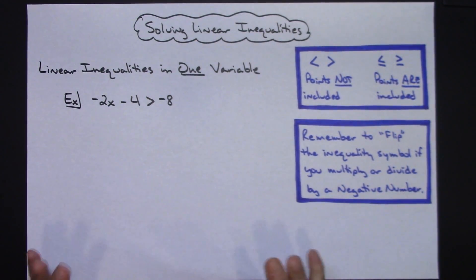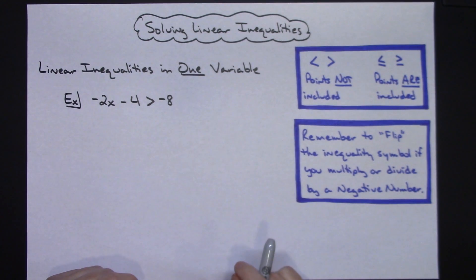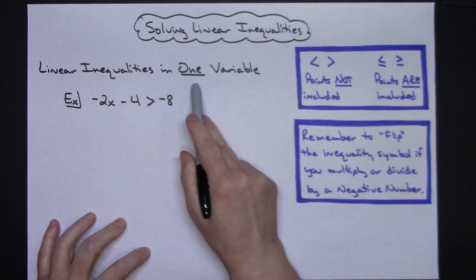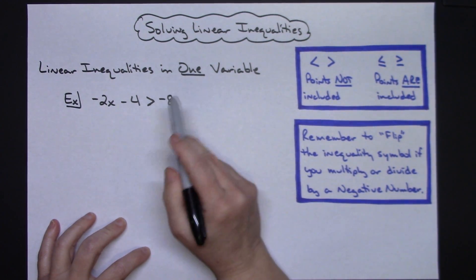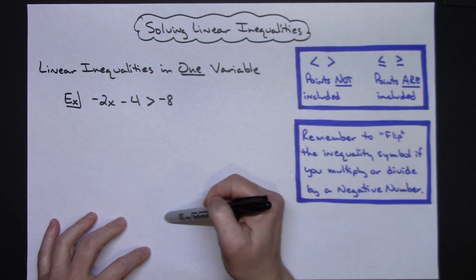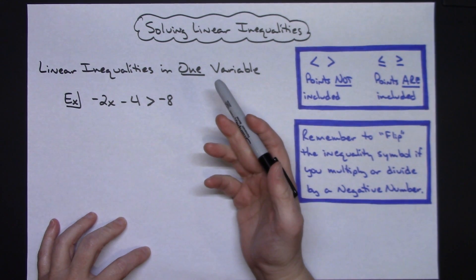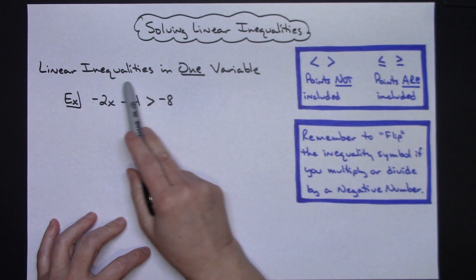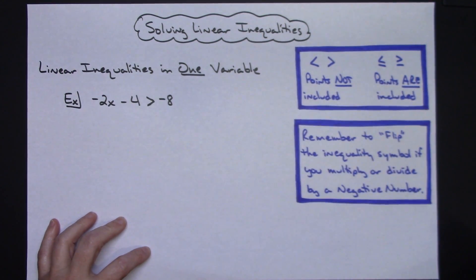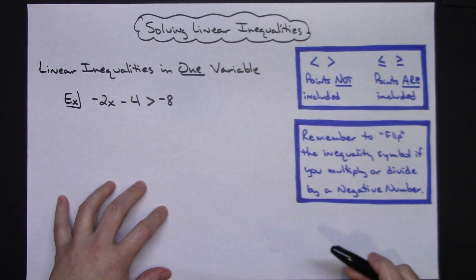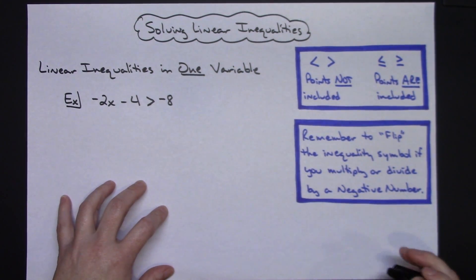In this video I'm going to be solving linear inequalities. I'm going to do two different types of examples: one based on linear inequalities written in one variable — solving them, graphing on a number line, and showing interval notation — and the second example with linear inequalities in two variables, showing how to graph those solutions on a coordinate plane.